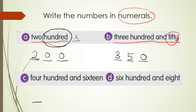Look at C: four hundred and sixteen. So four hundred is four, and sixteen is one, six. So the answer is 416.